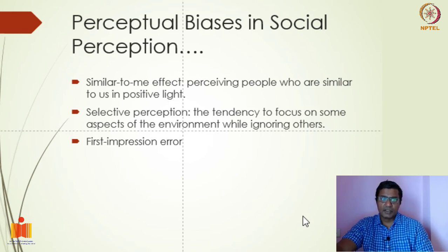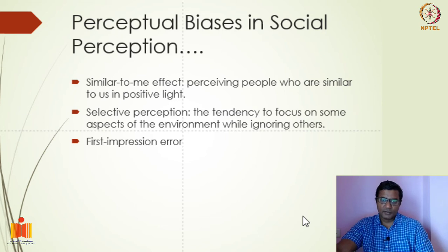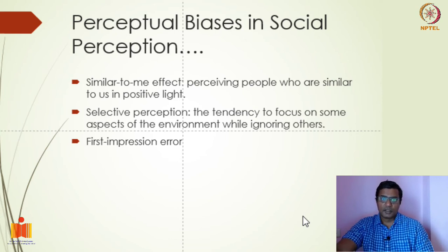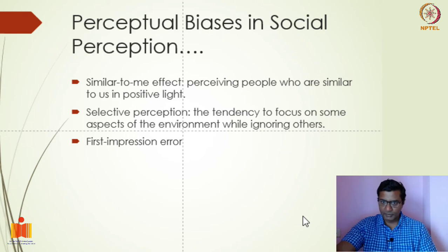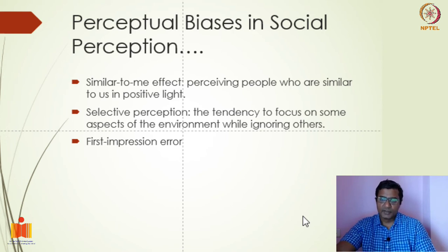The similar-to-me effect means that in the workplace or social context, when we perceive others to be similar to us, we tend to look at them in a positive light. For example, if you are standing in a queue and two people break the queue — one speaks your mother tongue and the other is from a different regional background — you tend to attribute a true reason to the one from your own language background, but assume the other has willingly broken the queue. Research shows that when we feel the other person is similar to us, we tend to trust them easily.